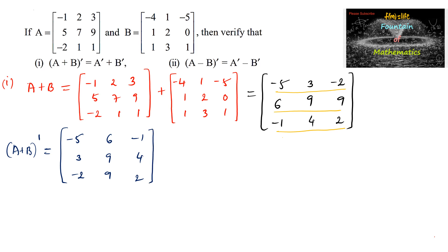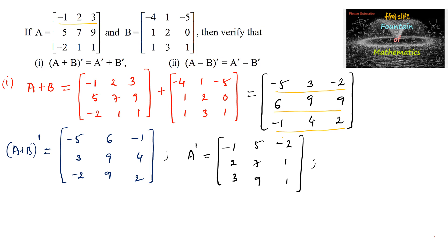Now let's find A transpose. For the given matrix A, interchanging rows and columns gives: first column −1, 2, 3; second column 5, 7, 9; third column −2, 1, 1. And B transpose is found similarly: first column −4, 1, −5; second column 1, 2, 0; third column 1, 3, 1.